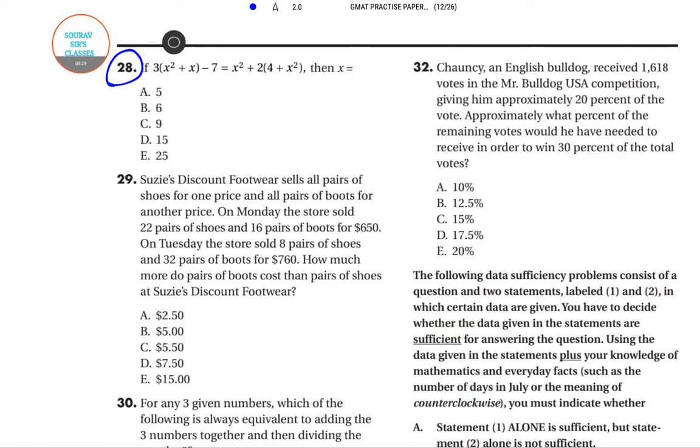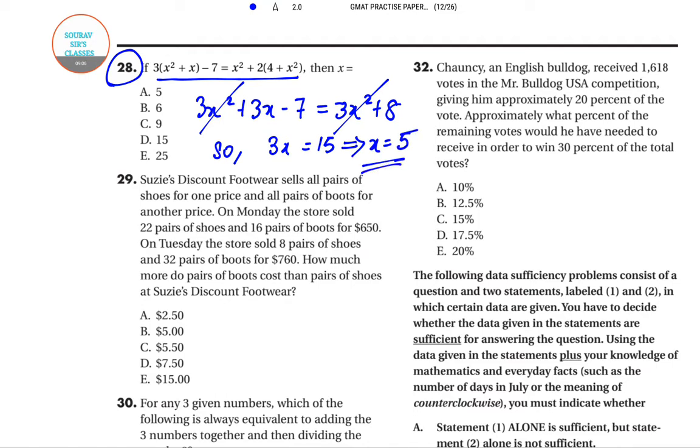Question number 28 will be the last question for this tutorial. The question shows a relation with variable x, and we need to determine the value of x. You can restate the equation as 3x squared plus 3x minus 7 equals 3x squared plus 8. This gets canceled and you have 3x equals 15, or ultimately the value of x becomes 5. The option that must be chosen is A.